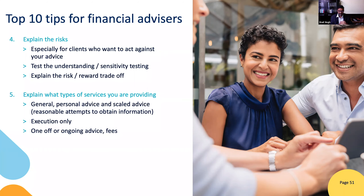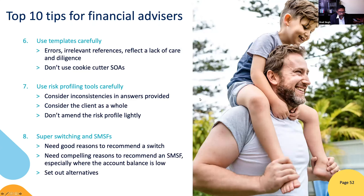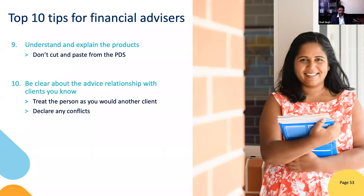Consider whether it's execution-only advice. Use your risk profile templates carefully. For super switching and SMSFs, you need a good reason to switch — and there needs to be a good reason for an SMSF. We don't have a fixed balance in mind, but you need to consider: is the client willing to satisfy the trustee duties? Do they have the time? Do they have the interest? Understand the products yourself — it sounds simple, but it's one of the best value-adds an advisor can provide. Products are getting more and more complicated and clients need you to explain in simple terms what they're getting into. Be clear about the advice relationship.